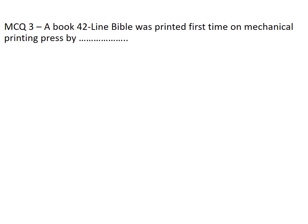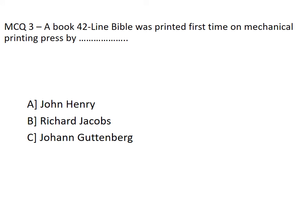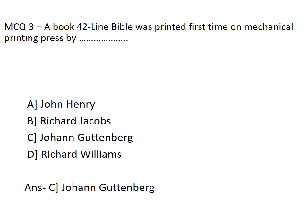The third question: a book called the 42-line Bible was printed for the first time on a mechanical printing press by whom? John Henry, Richard Jacobs, John Gutenberg, or Richard Williams? Yes, John Gutenberg is the person who got it printed for the first time with the machine — that is where mechanical printing started.